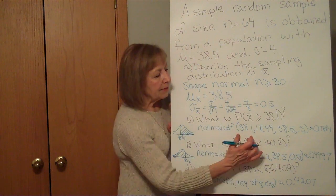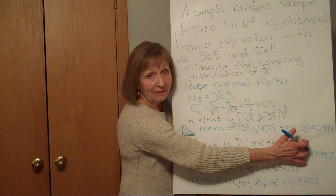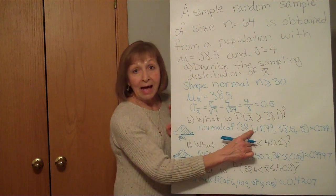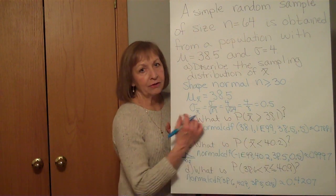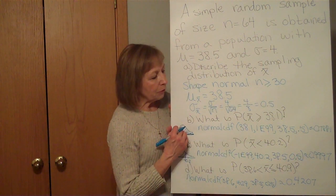If it doesn't give you the prompts and just gives you normalcdf with an open parentheses, you have to remember that it's low, high, mean, standard deviation in that order. The comma is above the 7 on your TI-83 or TI-84.